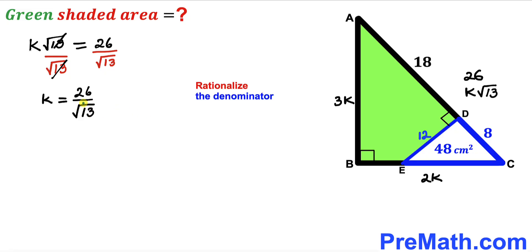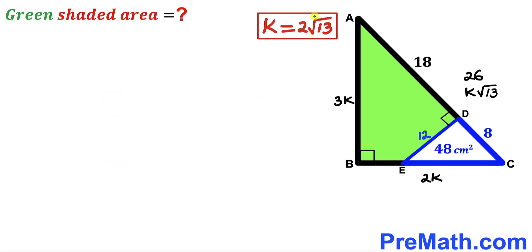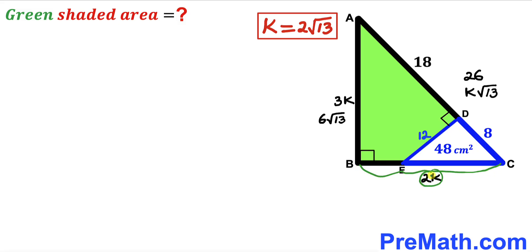Now I'll rationalize the denominator by multiplying and dividing by square root of 13. At the denominator, square root of 13 times square root of 13 is simply 13. Simplifying gives K equals 2 times square root of 13. Therefore AB, which is 3K, equals 3 times 2 root 13, giving us 6 times square root of 13. And BC, which is 2K, becomes 4 times square root of 13.